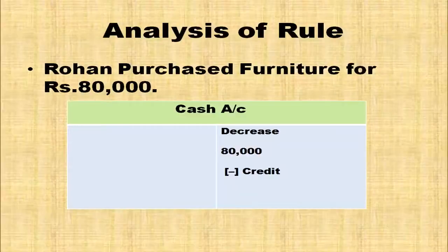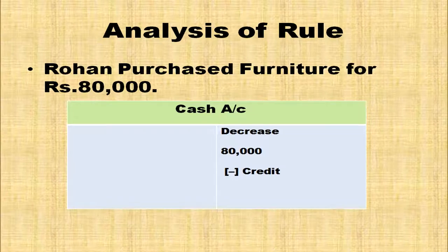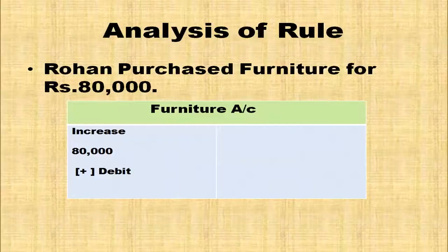Now you are thorough with the rules of accounting. Moving to transactions: Rohan purchased furniture for Rs. 80,000. Asset (furniture) is coming inside the business and cash is going outside. The two affected accounts are cash account and furniture account. Cash is going from the business, so there is a decrease in asset — cash account is credited. Furniture account is debited because asset is increased. So, furniture account debited and cash account credited.